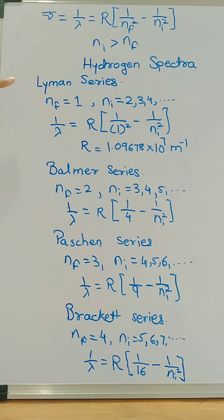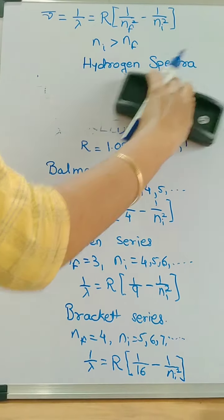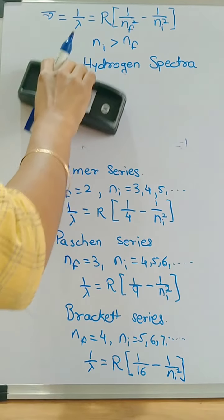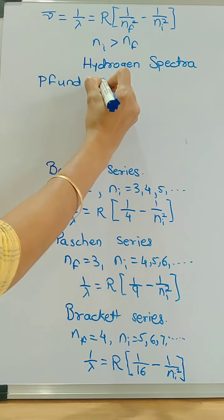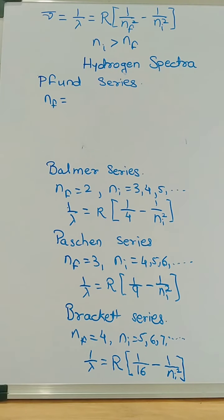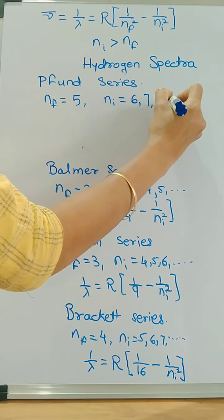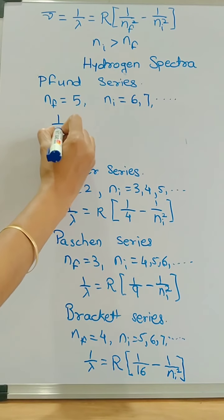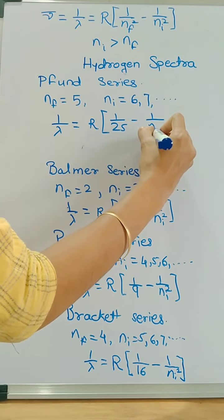For hydrogen spectra, the first series is Lyman, second is Balmer, third is Paschen, next is Brackett. The last series is the Pfund series. For Pfund series, nf value is 5 and ni has to be greater than 5, so it will be 6, 7 and so on. The equation for the wavelength is 1/λ = R × (1/25 − 1/ni²).